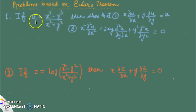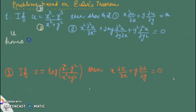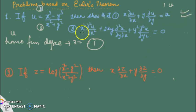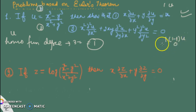It is clearly visible that u is a homogeneous function. The numerator is of degree 3 and the denominator is of degree 2, so u is a homogeneous function of degree 3 minus 2, which is 1. By Euler's theorem, the left-hand side equals 1 times u, which is u. For the second result, n·(n-1)·u = 1 times (1-1) times u = 0 times u = 0. So both results are verified.